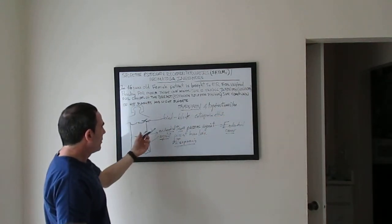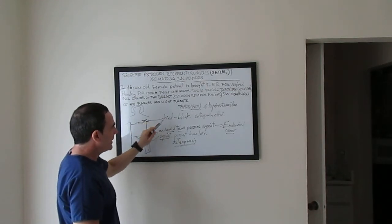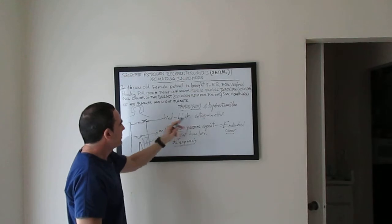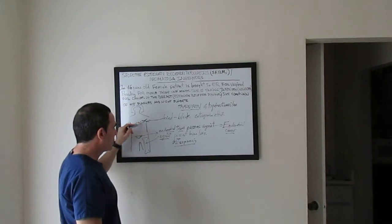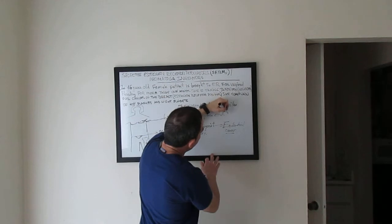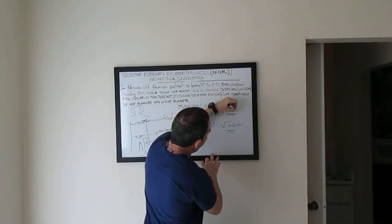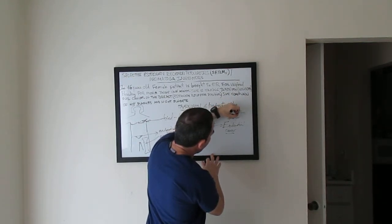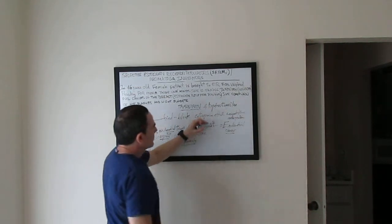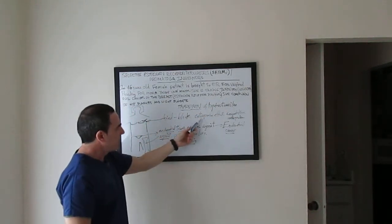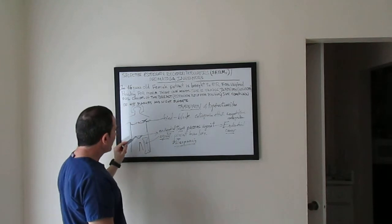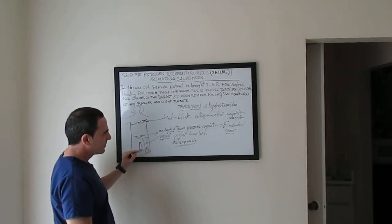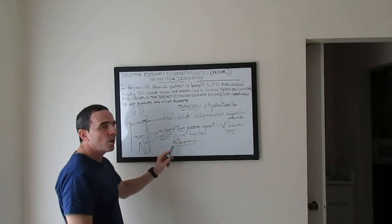The first action of tamoxifen is to bind and block the estrogen receptor positive in the breast tissue — this is called competitive antagonism. So to summarize: tamoxifen has antagonist effects on breast tissue, but has partial agonist effects in endometrial tissue and in bone, preventing bone loss and osteoporosis.